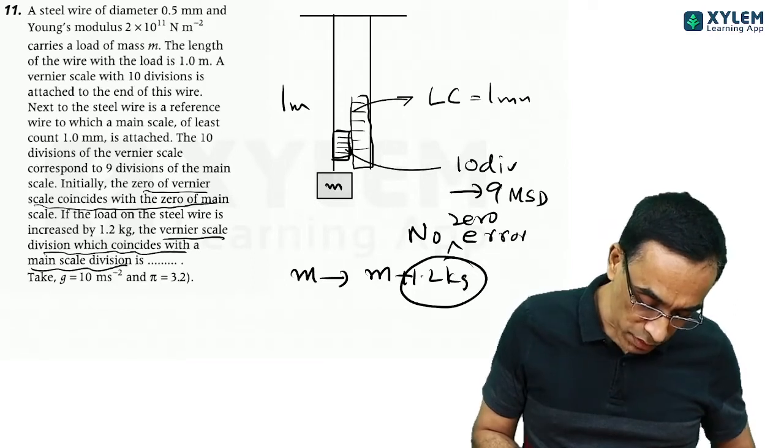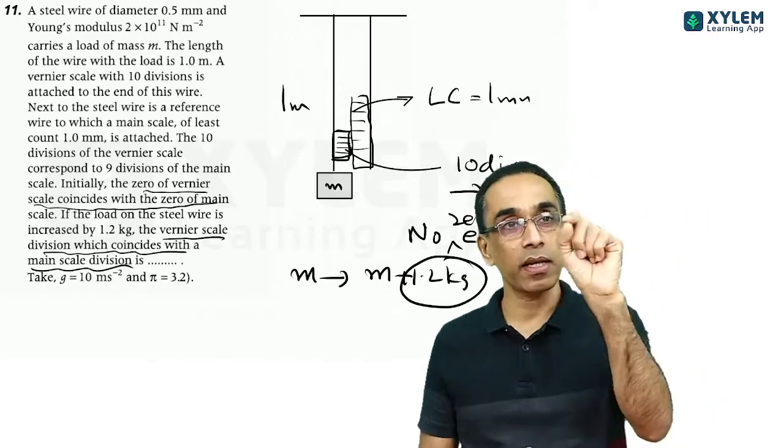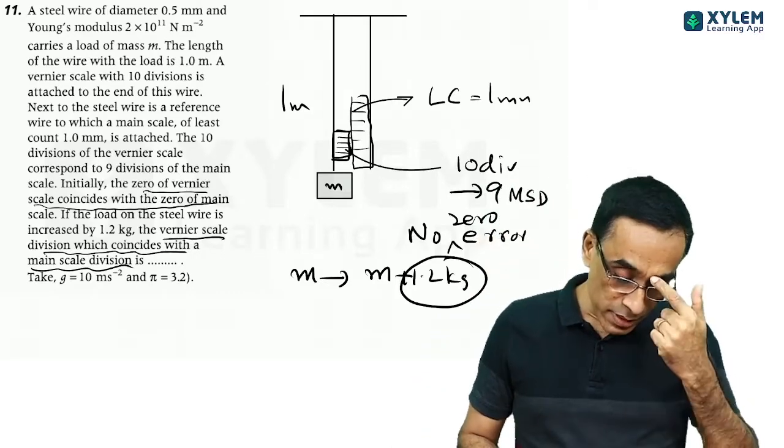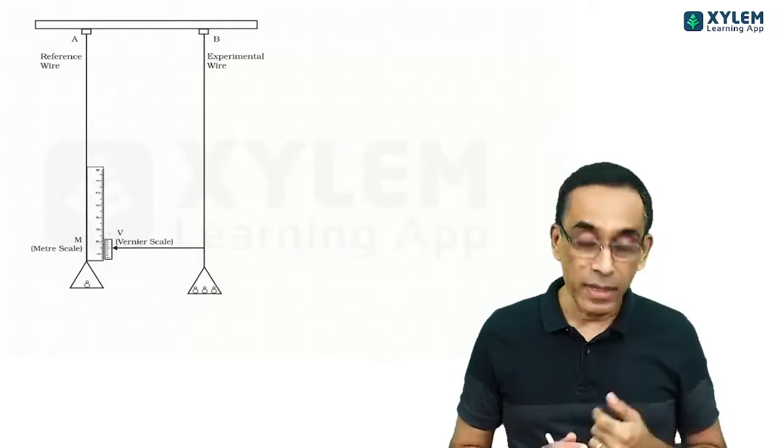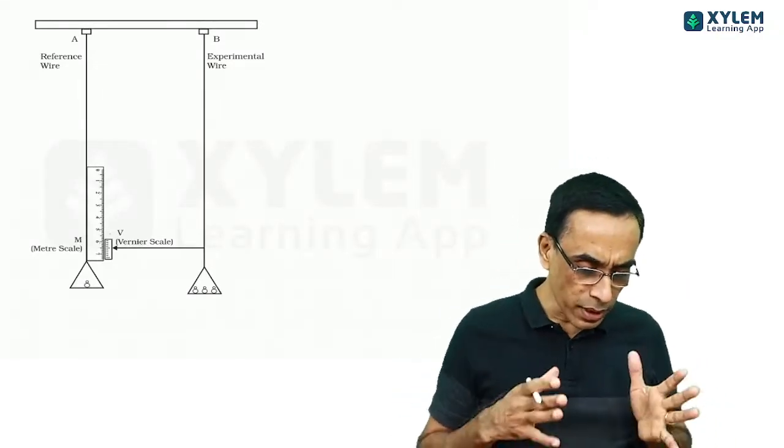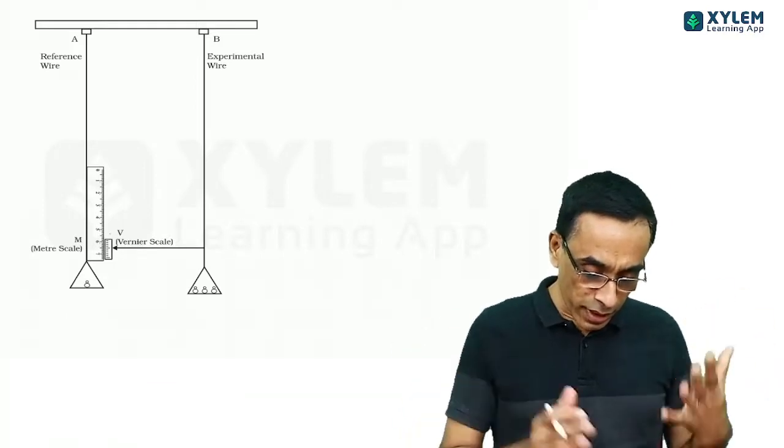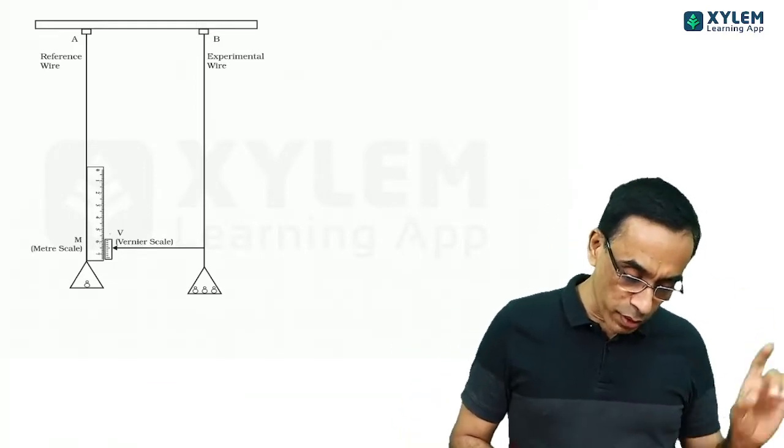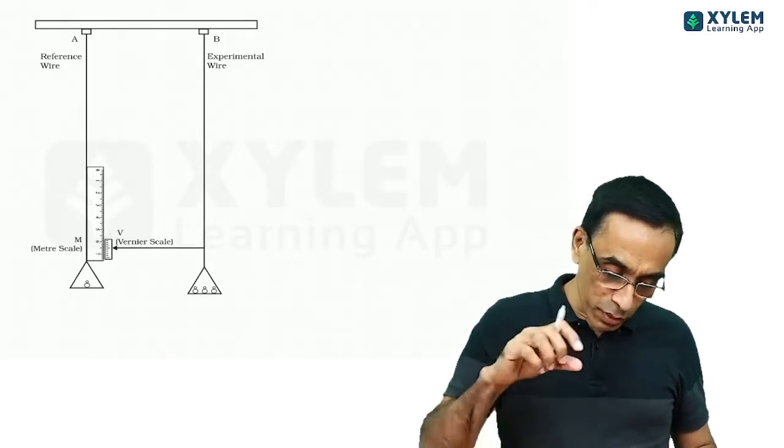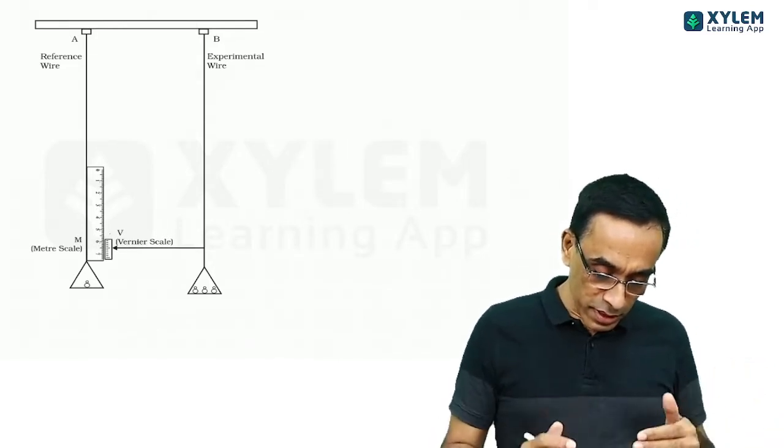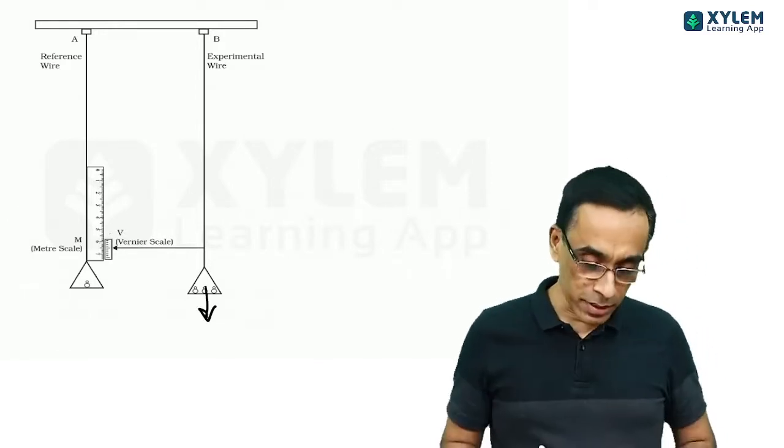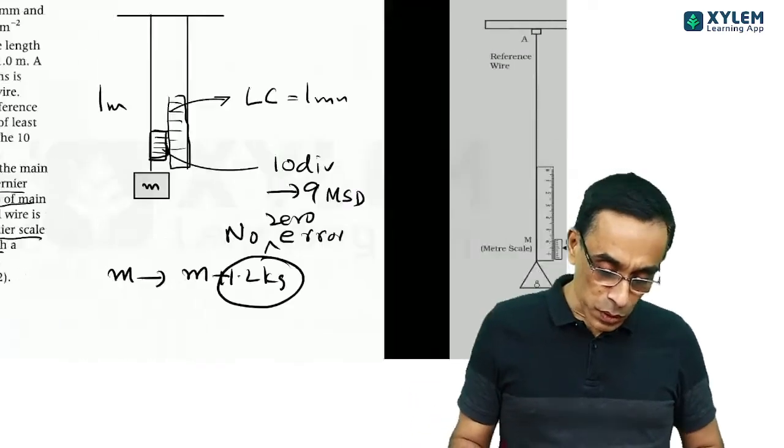If the load on the steel wire is increased by 1.2 kg, the wire is elongated. That elongation is measured by the vernier scale. You will get an additional reading. The vernier scale division which coincides with the main scale division is the answer.